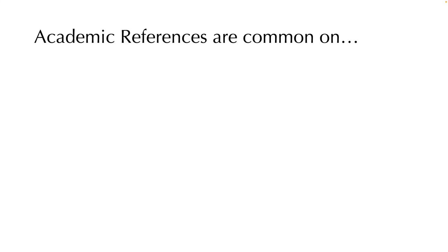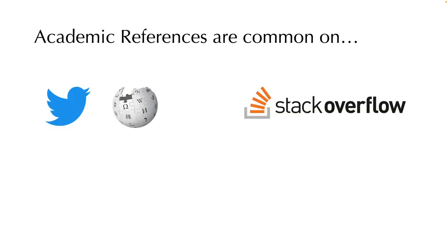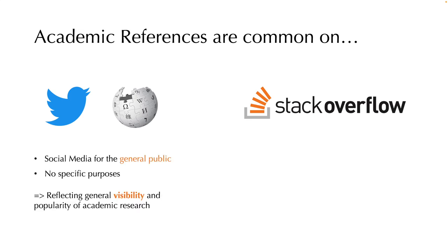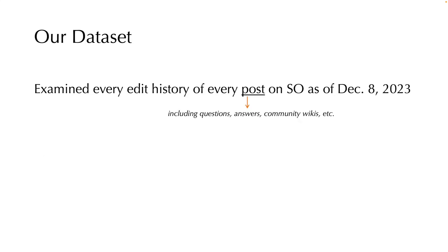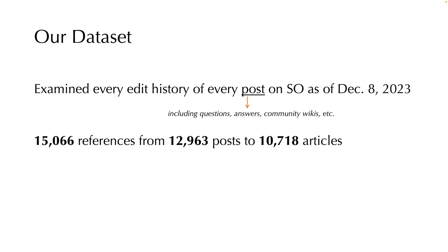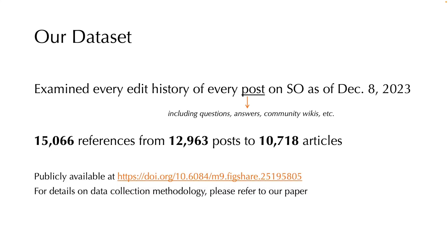Insights derived from prior studies on Twitter and Wikipedia focused merely on the general visibility and popularity, whereas academic references on Stack Overflow may reflect the real-world relevance and practicality of academic research. We analyzed 44 million URLs found in every history of every post on Stack Overflow and identified over 15,000 academic references to more than 10,000 articles. This dataset is publicly available to support future research.